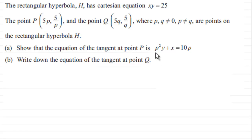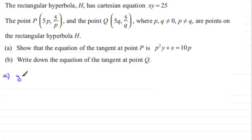In part a we've got to show that the equation of the tangent at the point P is p²y + x = 10p. To find the equation of a tangent at any point on the curve, we need to first differentiate the curve to get the gradient at any point x. So I'd rearrange this so that we have y equals 25 over x, or 25x to the power minus 1.